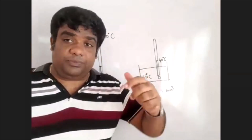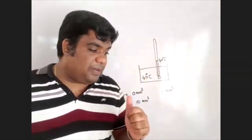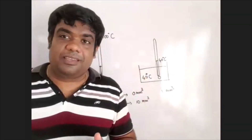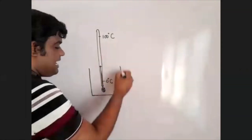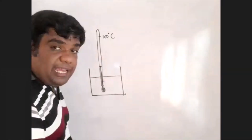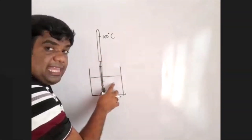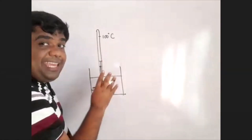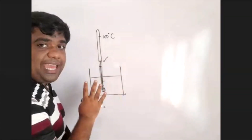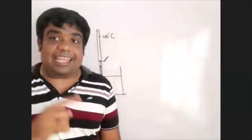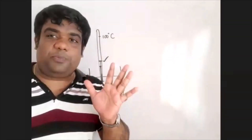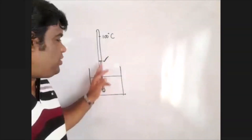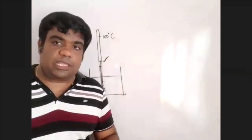We also need a lower fixed point and an upper fixed point for the thermometric property. Thermal equilibrium is important — when using temperature measurement, thermal equilibrium must be achieved. That is why thermal equilibrium is used in accurate temperature readings.